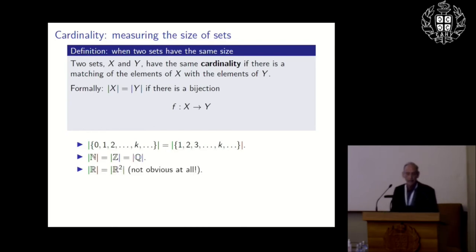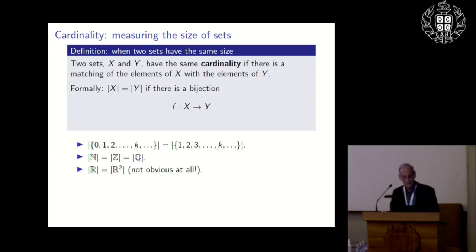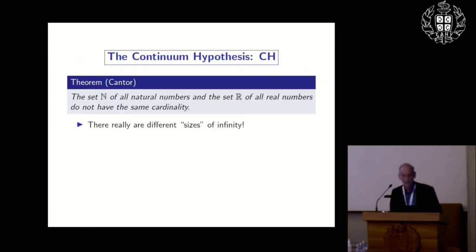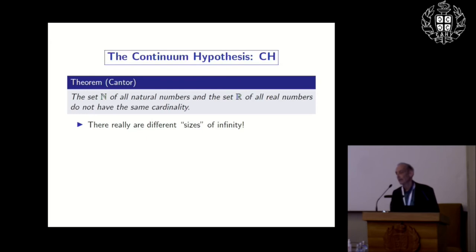The cardinality of the real numbers is the same as the cardinality of the points in the plane — not obvious, since the line seems so much smaller. But we're talking about cardinality, not topology. Assuming the axiom of choice, for every set X there's an ordinal such that the cardinality of X equals the cardinality of that ordinal. And now we come to the defining question of set theory: Cantor's theorem shows that the set of natural numbers and the set of real numbers do not have the same cardinality, so infinity comes in different sizes.